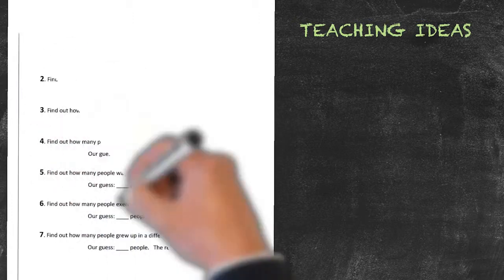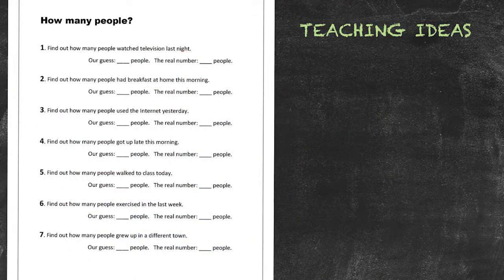In this mill drill activity for the past simple tense, we'll be using a two-stage activity. Basically, first we'll have our students guess how many people did a certain thing in the past.